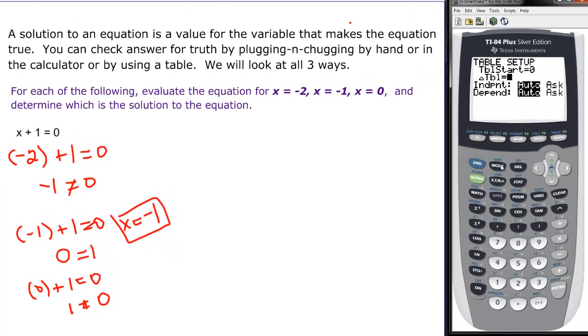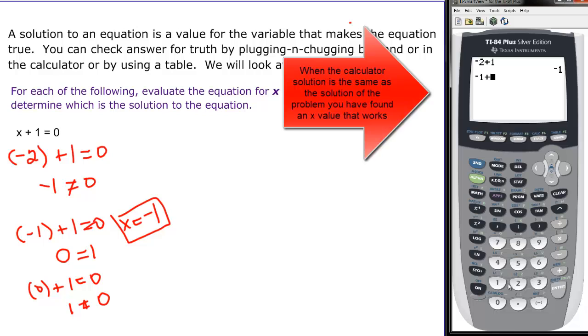If I wanted to use my calculator I could do the same thing. I could come over here to my calculator and where I see x I would just put negative 2. And then plus the 1 and find out that that is equal to negative 1, which isn't 0 so I don't include it. And then I could try negative 1 for my x plus the 1. And when I enter there I find out it's 0 which is what I'm looking for. So I know that x equals negative 1.